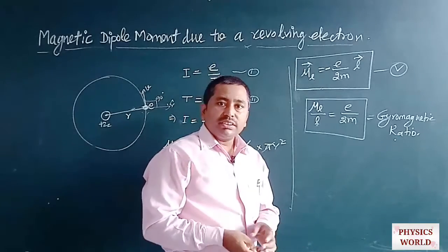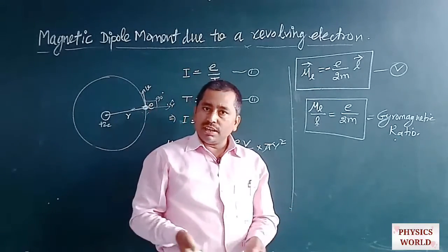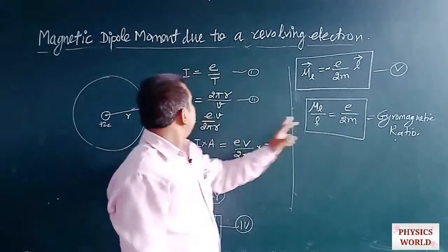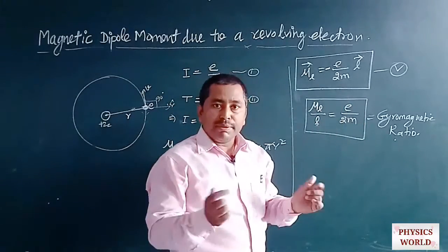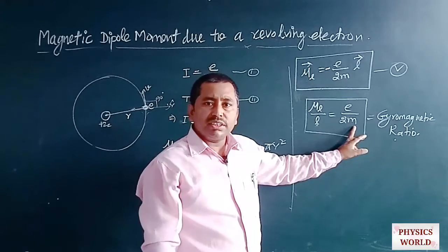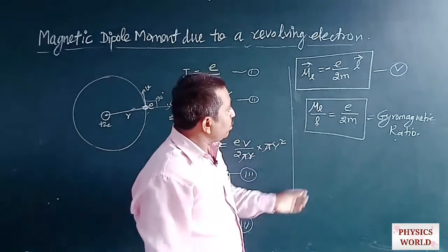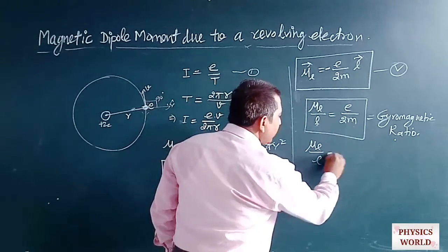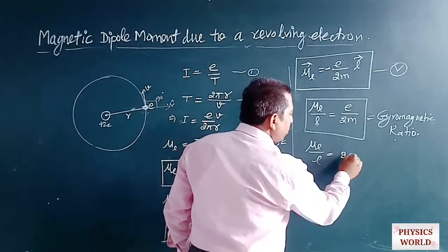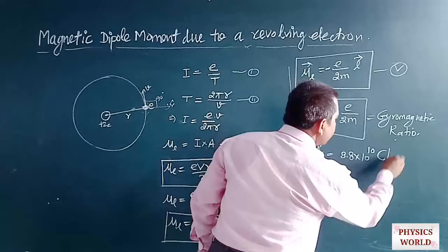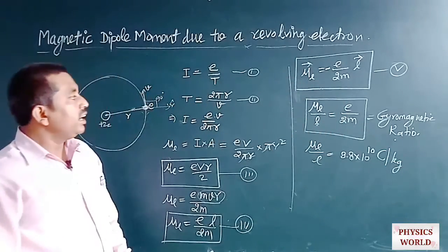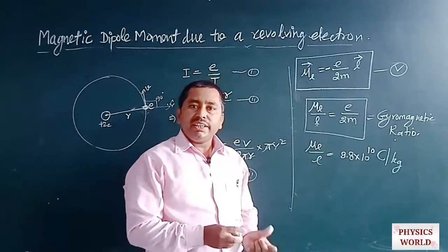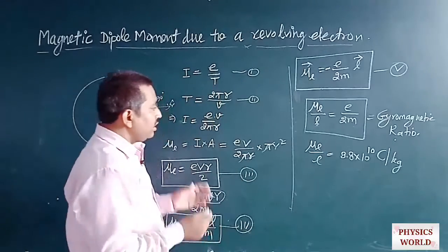By experimental calculation, Millikan and J.G. Thomson measured the charge-to-mass ratio of an electron, finding E/m ≈ 1.76 × 10¹¹ C/kg. The gyromagnetic ratio μL/L is half of that, equal to 8.8 × 10¹⁰ C/kg. This is a constant quantity, and its value can be verified by experimental observation.